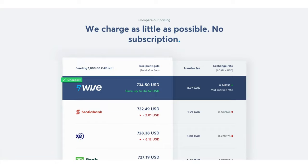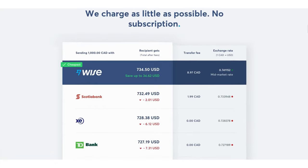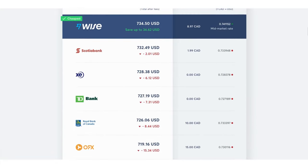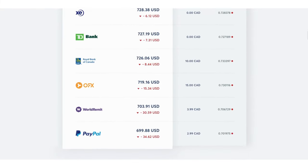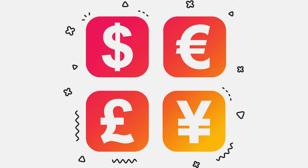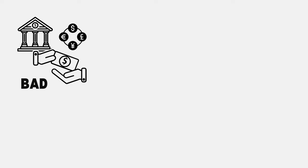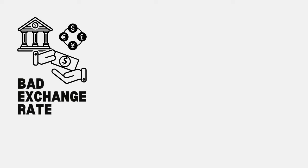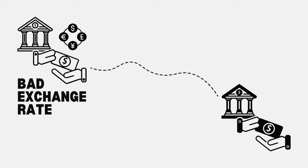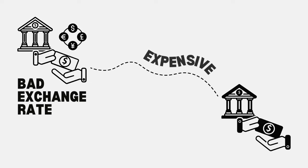Here's a look at WISE's pricing as compared to other platforms. The reason why you can send money at the real exchange rate with WISE is because of the way that it does transfers. If I had money I wanted to send to a friend in the United States, a traditional bank would convert my Canadian dollars to US dollars at a bad exchange rate and then send that money across the border, which is what makes that transfer so expensive.